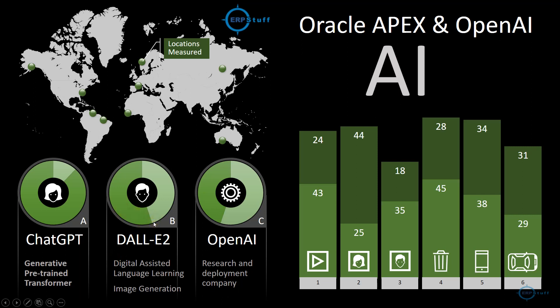OpenAI has different products, and we will be discussing at least two. The demo will be on ChatGPT. There is also DALL-E — Digital Assisted Language Learning — version 2, which is for image generation using AI. And then there is ChatGPT, which stands for Generative Pre-Trained Transformer. Their model is trained well enough that it will understand your textual inputs.